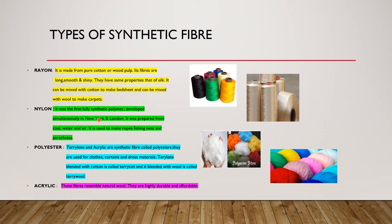Nylon was the first fully synthetic polymer developed simultaneously in New York and London. That's why its name is Nylon — 'Ny' from New York and 'Lon' from London. It was prepared from cold water and air. Nylon fibers resemble silk fiber. It is water resistant, very strong, tough, hard. It is used for making ropes for rock climbing, fishing nets and parachutes. This is a picture of nylon.